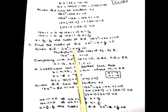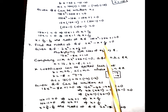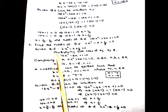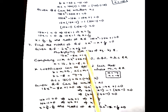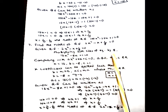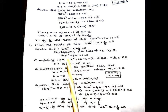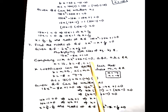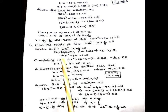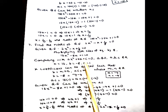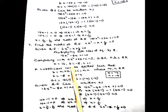Find the roots of the quadratic equation 2x² - x + 1/8 = 0. Multiplying both sides by 8, we get 16x² - 8x + 1 = 0. Comparing with ax² + bx + c = 0, we get a = 16, b = -8, and c = 1.